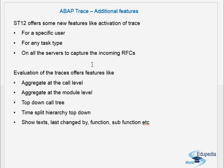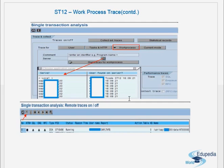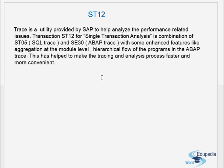The evaluation of traces offers features like aggregation at the call level, aggregation at the module level, and a top-down call tree. When you evaluate the trace, you can aggregate it at the call level or at the module and sub-module levels. The trace follows a top-down call tree — for example, program A calling B. You can also view time split hierarchy top-down and show the last change by function or sub-function. ST12 is a powerful tracing mechanism — a combination of ST05 and SE13, the SQL trace and ABAP trace.